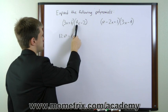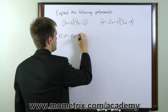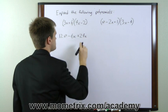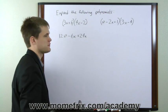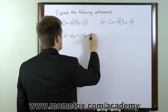The inside pair, 6 times 4x, gives us 24x. And the last pair, 6 times negative 2, gives us minus 12.